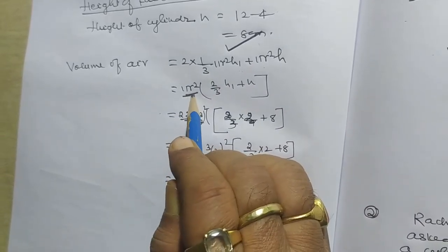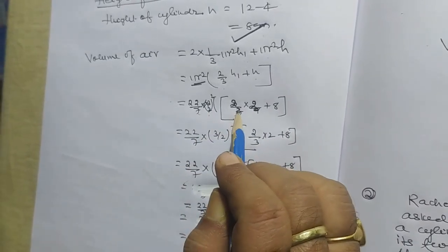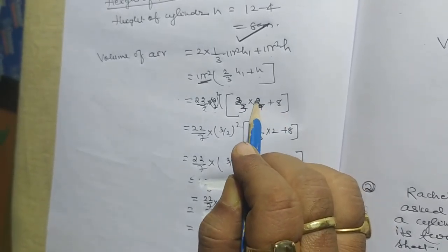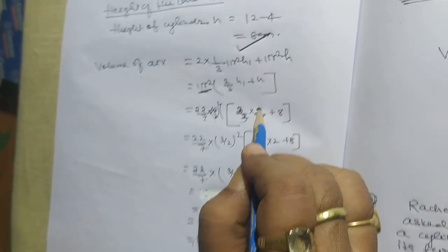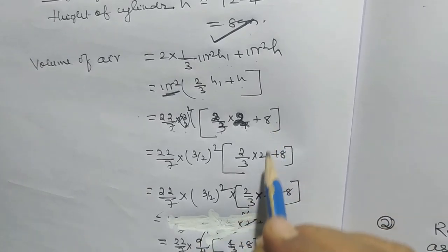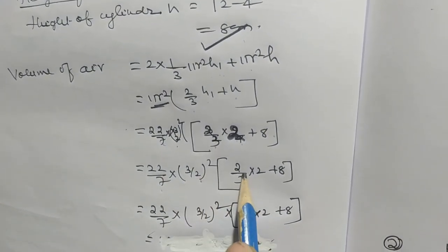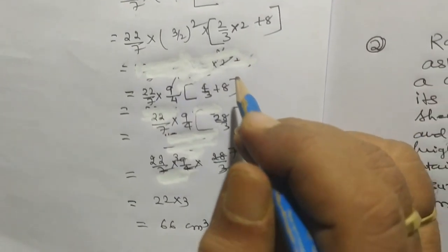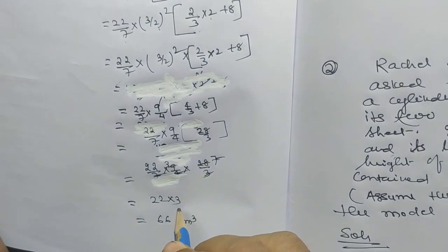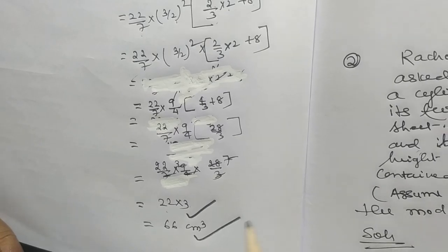Taking common pi R square: two by three H1 plus H. That is pi R square, two by three into two plus eight. It will be twenty-two by seven into three by two whole square, two by three into two plus eight. After solving, we will get the volume of air equal to sixty-six centimeter cube.